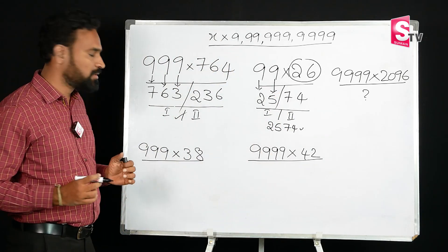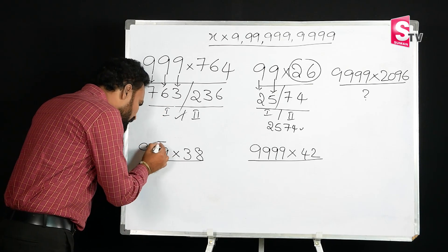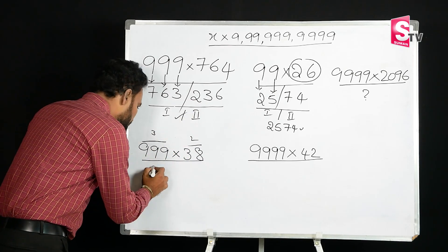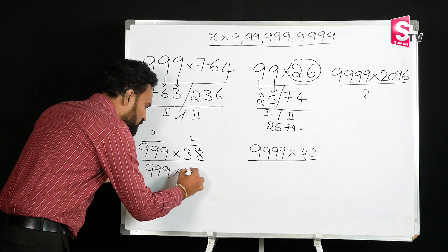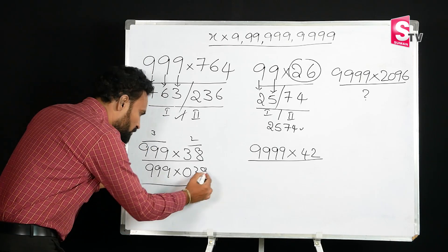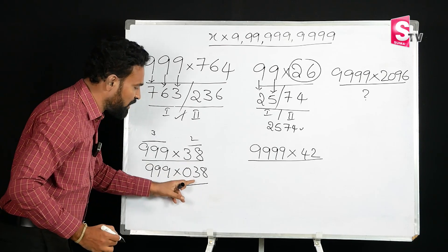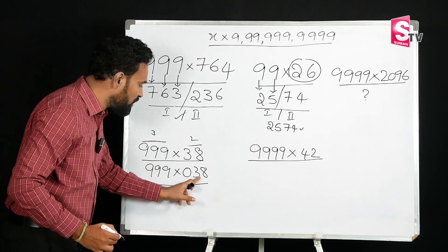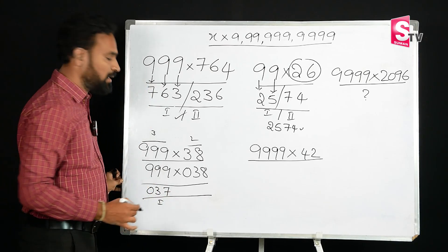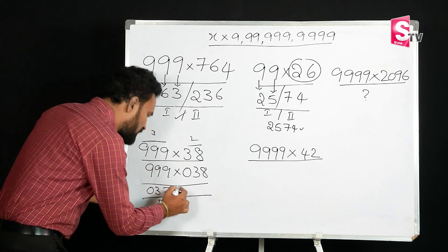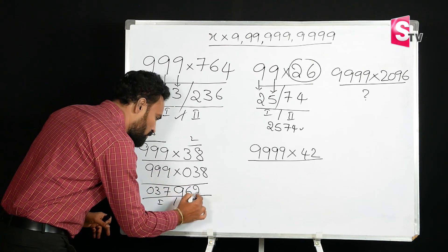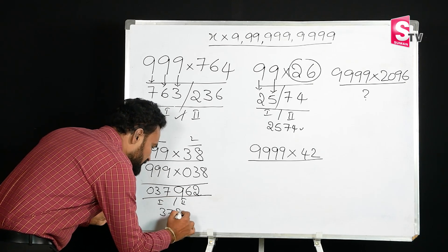The next problem is 399 into 38. When you apply this method, you need to match the number of digits. 399 has 3 digits but 38 has only 2 digits, so we write 38 as 038. First part: 1 less than 038 is 037. Second part: 9 minus 0 is 9, 9 minus 3 is 6, 9 minus 7 is 2. So the final answer is 37962.